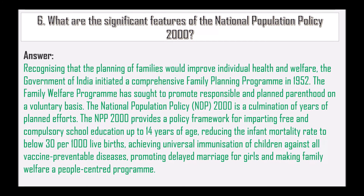The NPP 2000 provides a policy framework for imparting free and compulsory school education up to 14 years of age, reducing the infant mortality rate to below 30 per 1,000 live births, achieving universal immunization of children against all vaccine-preventable diseases, promoting delayed marriage for girls, and making family welfare a people-centered program.